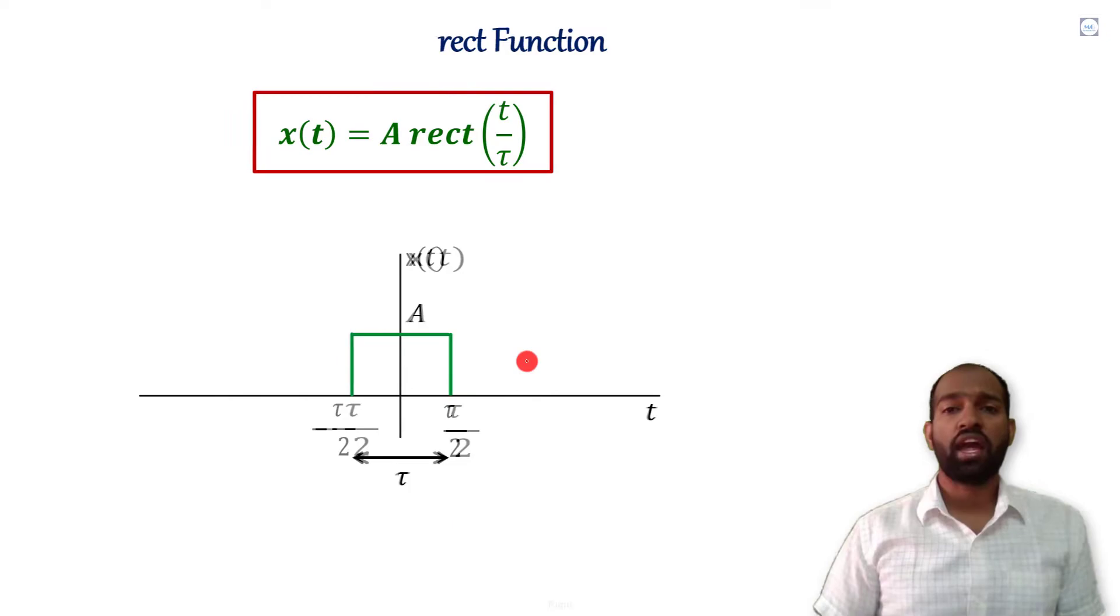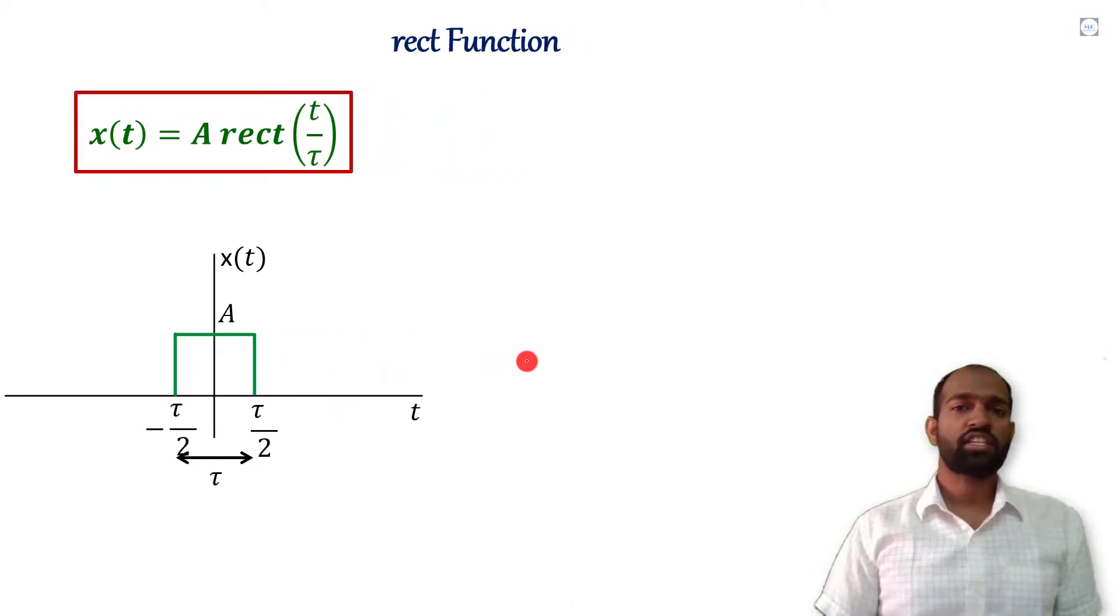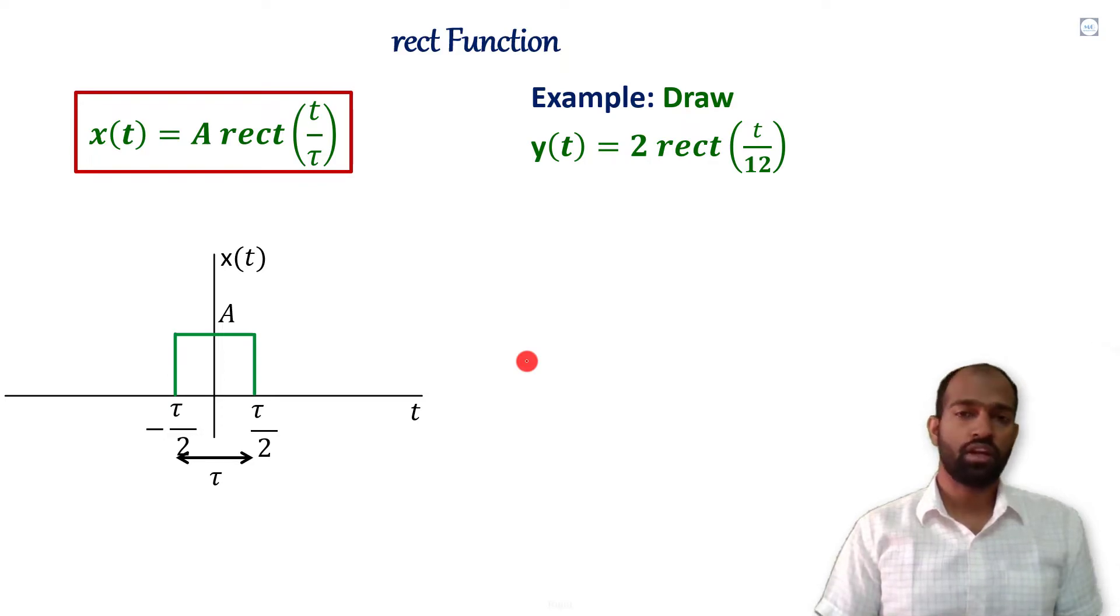Now, let's understand it via an example. Let's take an example so that its concept will be crystal clear to us. This is the example where y(t) equals 2 rect(t/12).